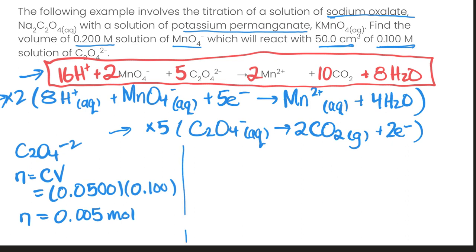Next we need to use a mole ratio, so this is using our balanced chemical equation. We know that for every 2 moles of MnO4- we are reacting with 5 moles of oxalate ions.